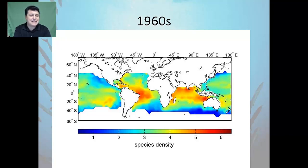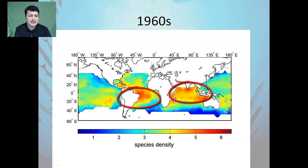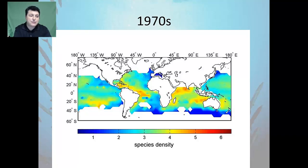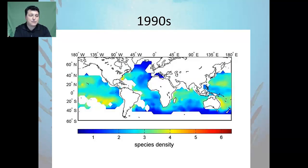In the 1960s we can see that there are many areas where we have great species density off the coast of South America and off the eastern coast of Africa. Just ten years later, the overall species density in those areas was greatly reduced, and that trend continues as we move forward in time.